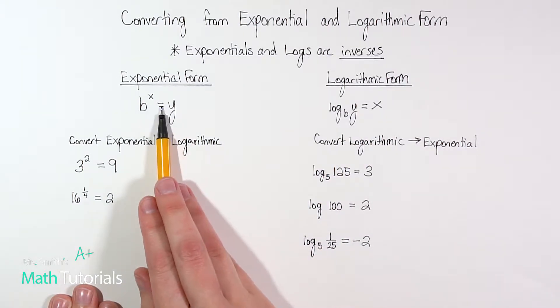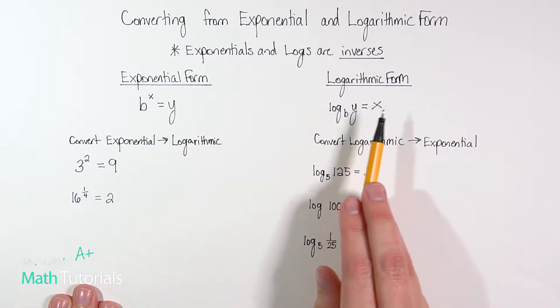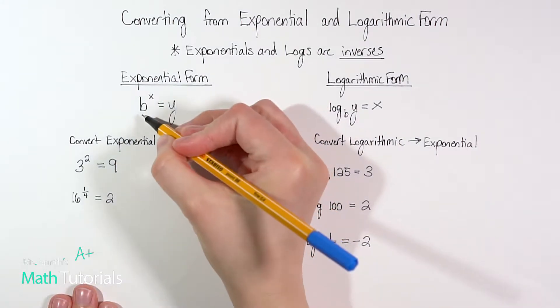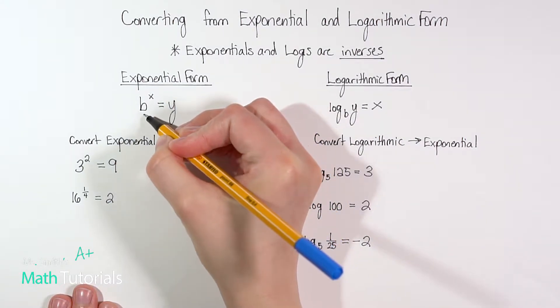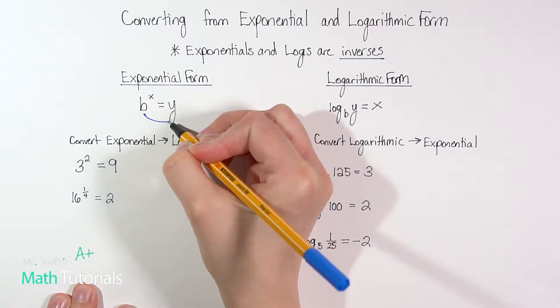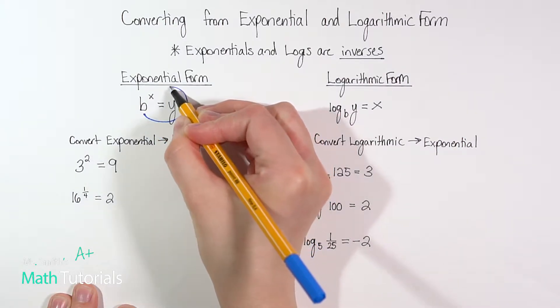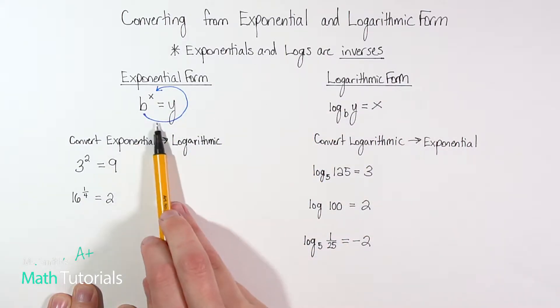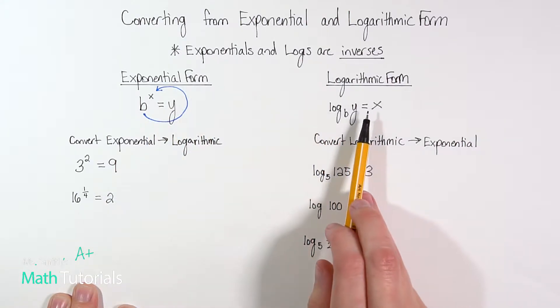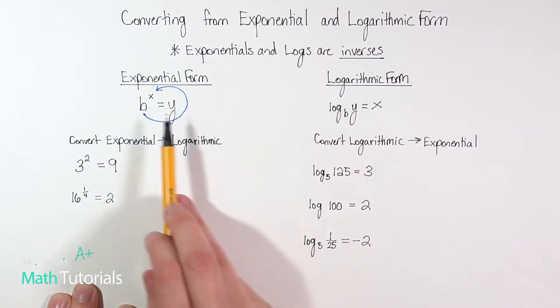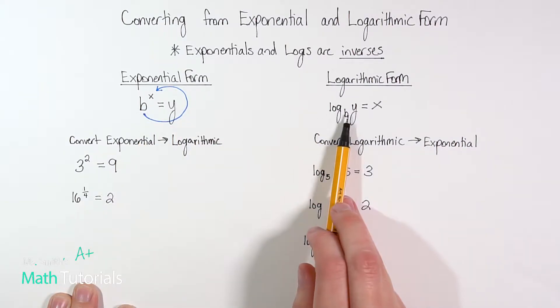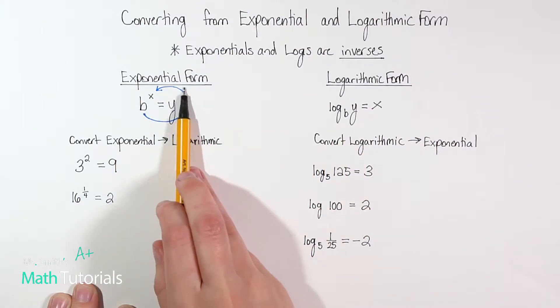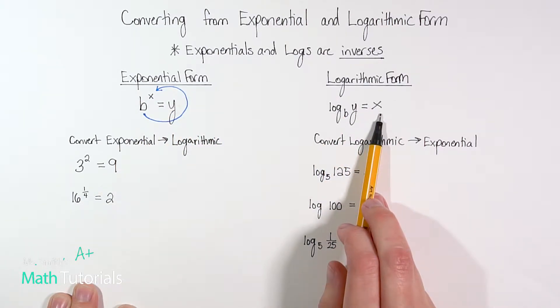So in order to go from one form to another, we make this thing called a backward c. You start with your item on the most left and then you make this c all the way, this backward c, and we're going to end with the x. So when we do this in exponential form, we end up with a log form, the way we write it. So we would say b, and then the next thing we get to is a y, and then the last part we get to is the x.